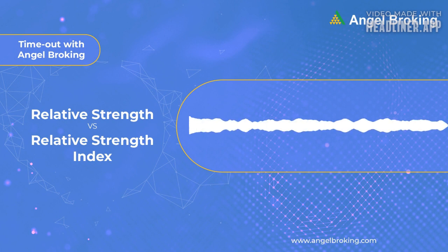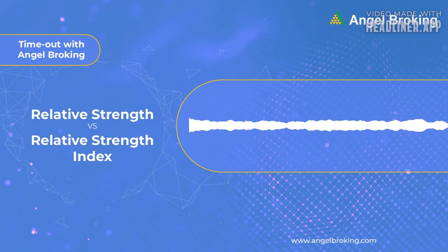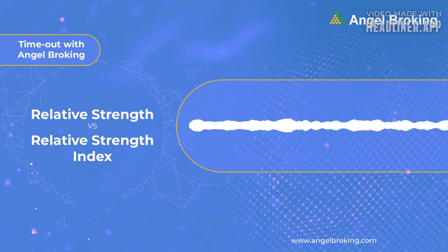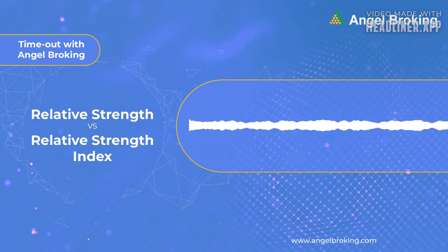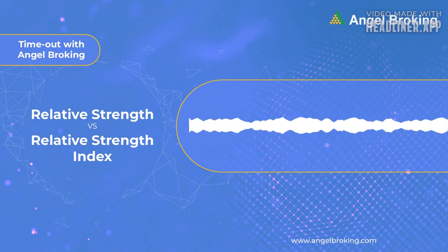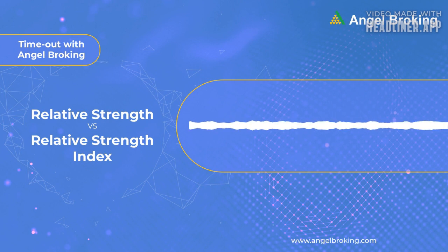RS is calculated by dividing security A's price with security B's price along the same time period. When these values are plotted against time, we get a very simple visual way of assessing if security A is performing better than security B. To do this, all you need to do is to see if the line is going up or down. If it goes up, then A is performing better than B, while downward movement indicates the opposite. You can measure A's performance with its sector-specific index, or even its market index. However, this doesn't make it a Relative Strength Index — this is a very common confusion amongst those who are new to trading.